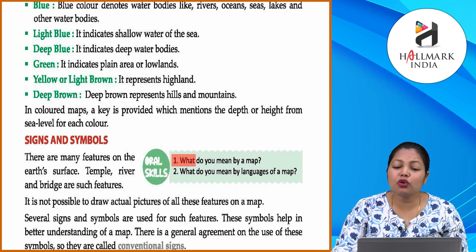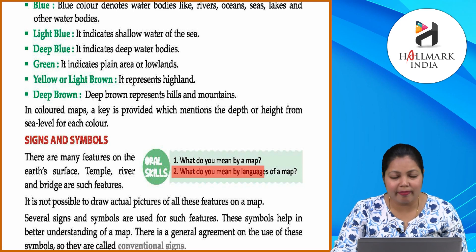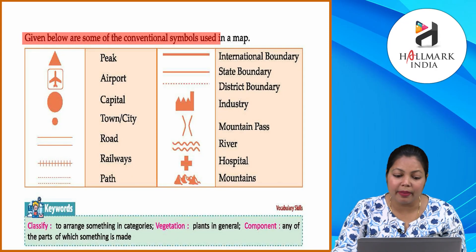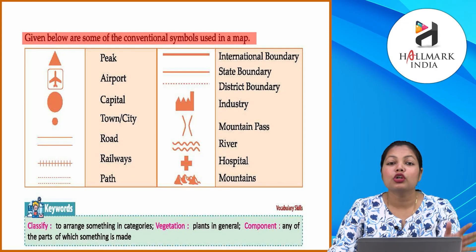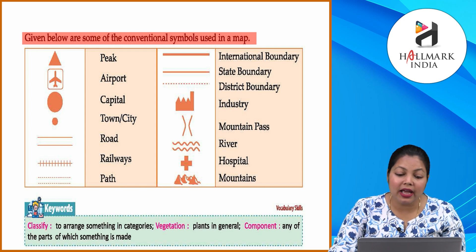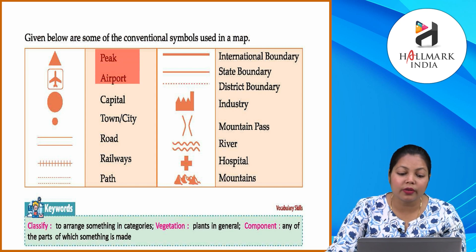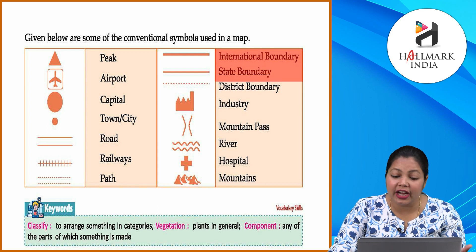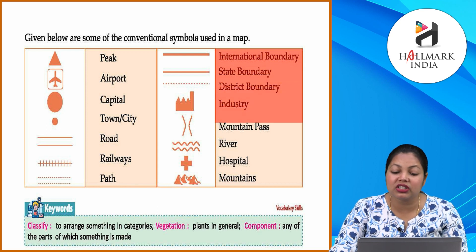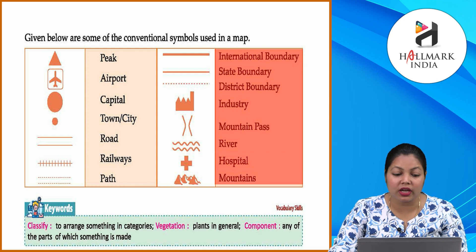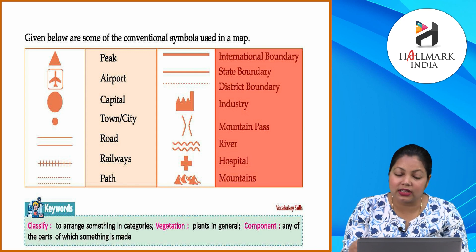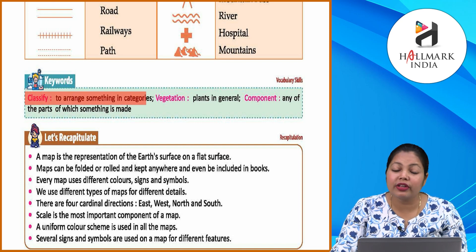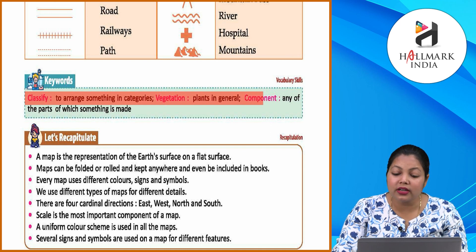Oral skills: What do you mean by a map? What do you mean by languages of a map? — Yeh aap khud se karenge. Given below are some conventional symbols used in a map — jaise ki peak, airport, capital, town, city, road, railway, path, international boundary, state boundary, district boundary, industry, mountain pass, river, hospital, mountains. Yeh saare symbols hain in saare areas ke.